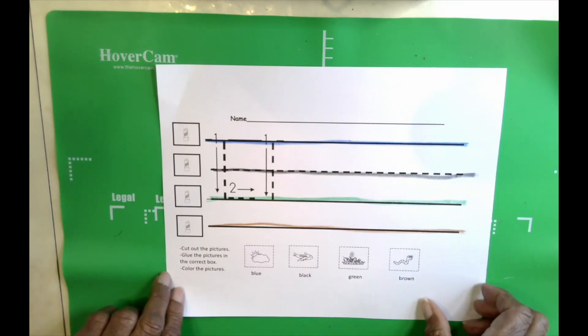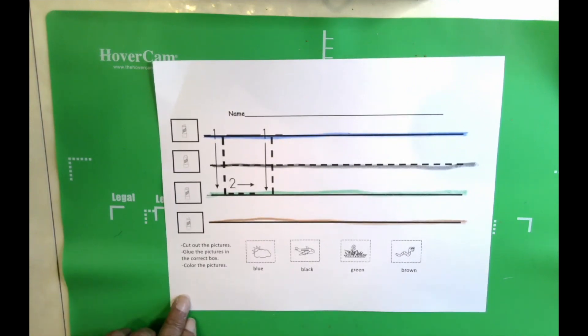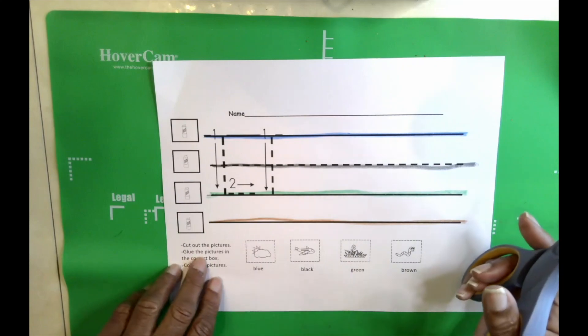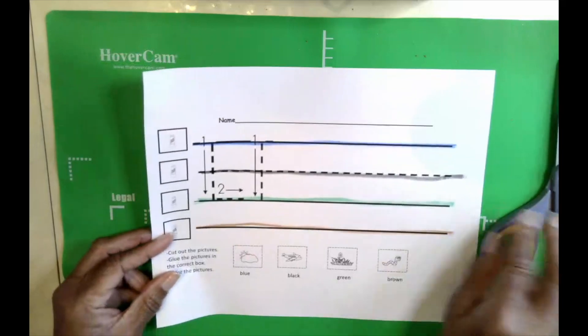Okay, now you're going to need your scissors. Get your scissors. We're going to cut out the pictures at the bottom. Take a look at the pictures.